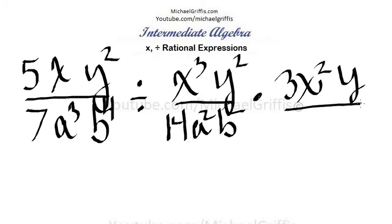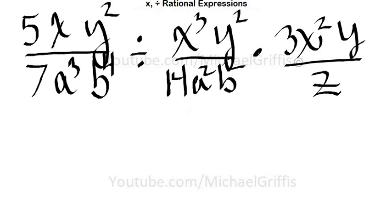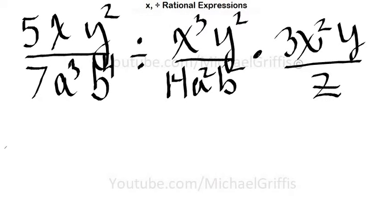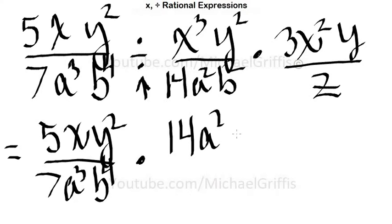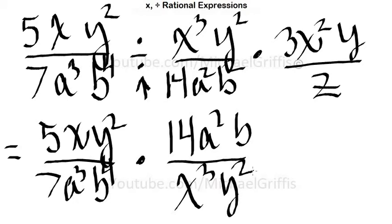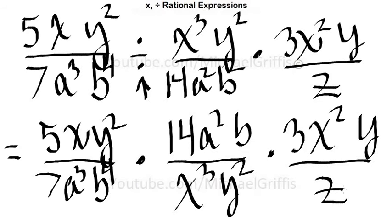You should pause the video and simplify this, then come back. I'm going to rewrite everything, but change the division to multiplication and flip the fraction. So it becomes times 14 a squared b over x cubed y squared, times three x squared y over z.